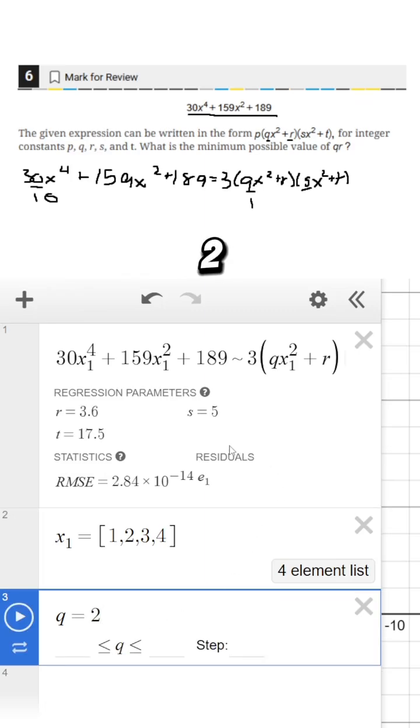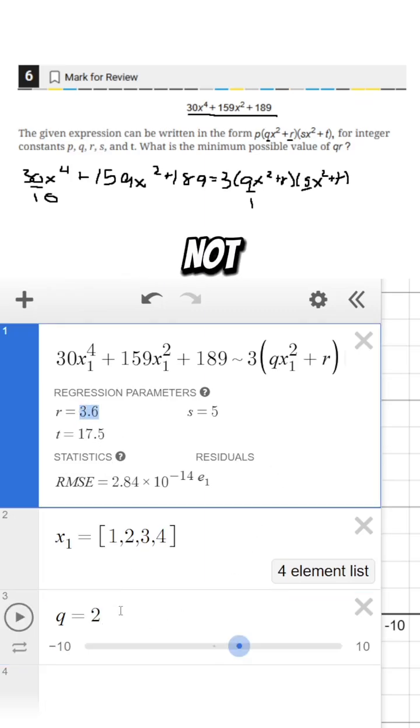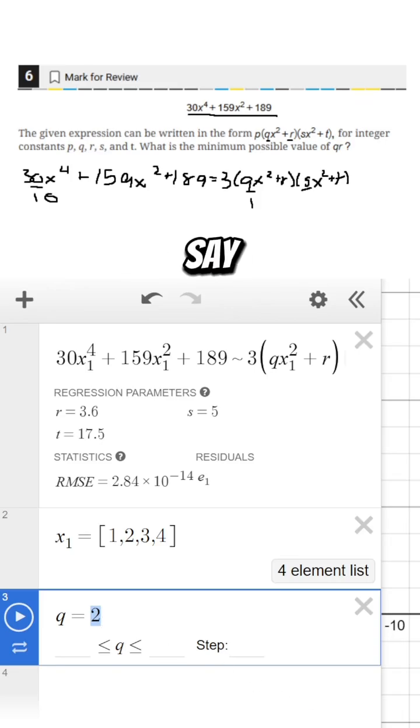Now if I try q is 2 it says again that one of our answers is not an integer so that's not going to work. Now if I say q is 5 it looks like we have q and r going to be 5 and 9 which is 45, so we say okay great that works.